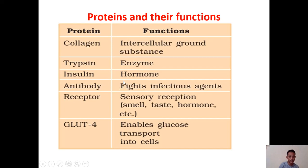Some proteins in our bodies fight against infectious agents. Examples are antibodies. The main function of antibodies is to fight against antigens. Some proteins are sensory receptors for smell, taste, and hormones. GLUT-4 enables glucose transport into cells. All these demonstrate the various roles proteins perform in living systems.